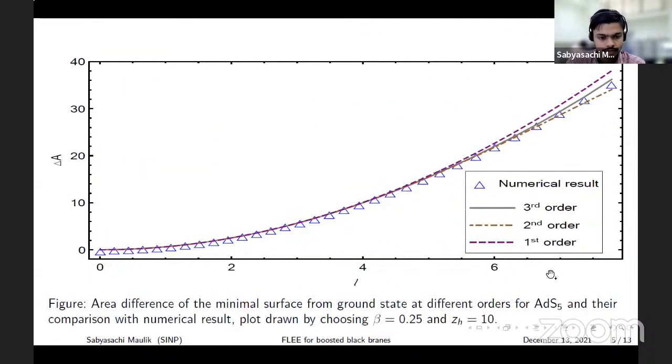In this figure I have plotted the difference in area with respect to AdS ground state against the width of the strip to show the effect of including higher order corrections. The purple curve at the top is the area difference at leading order. The second order correction is negative so the area decreases, but the third order is positive so it increases by a small margin.